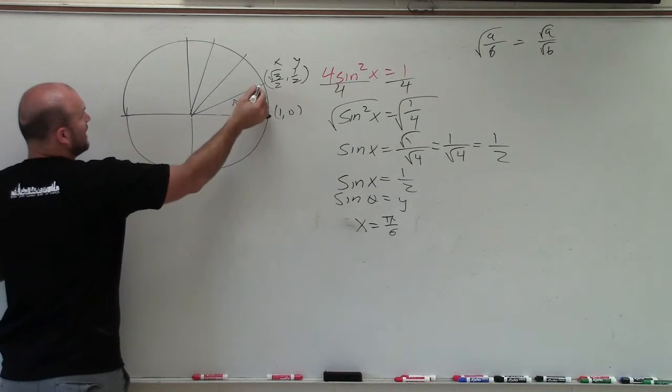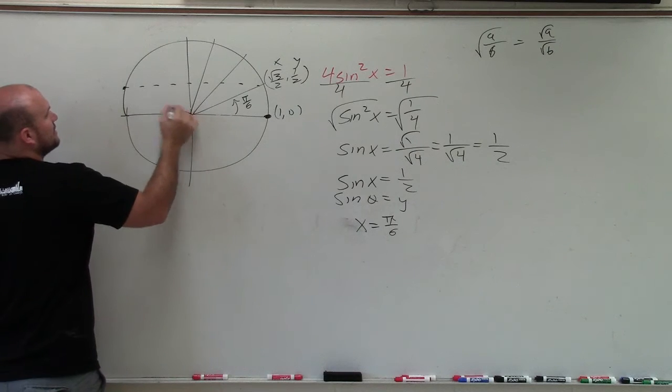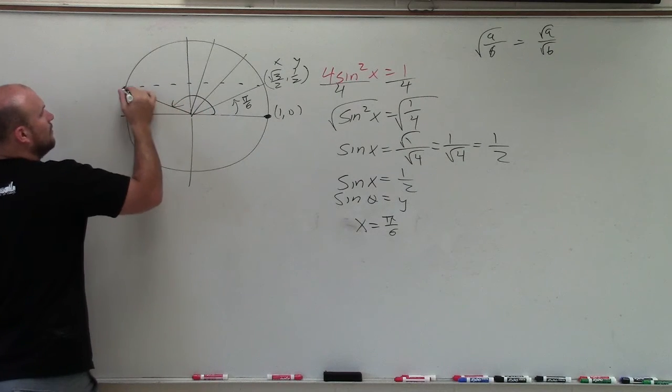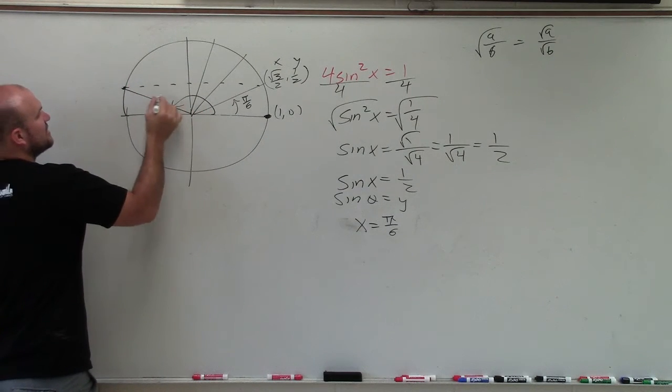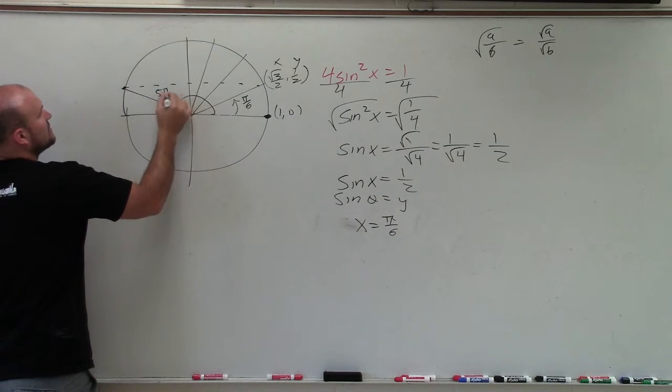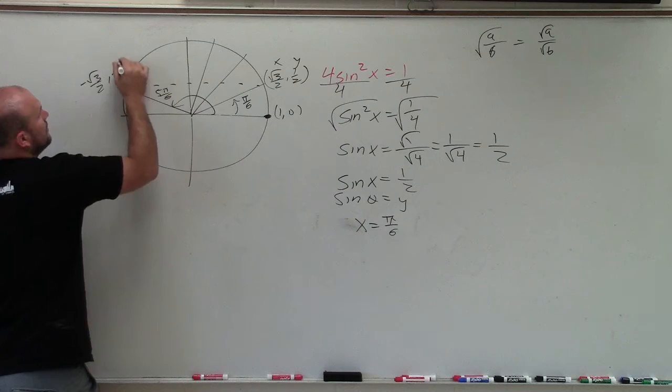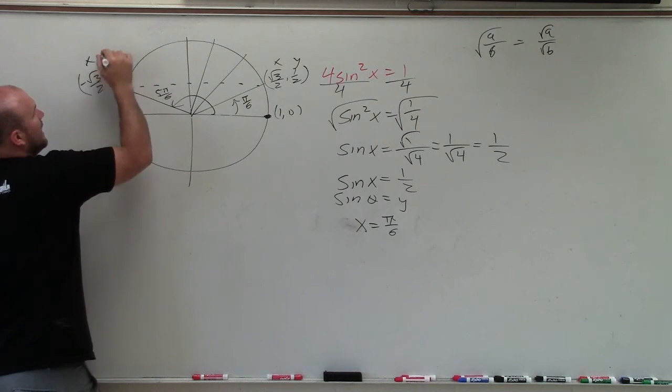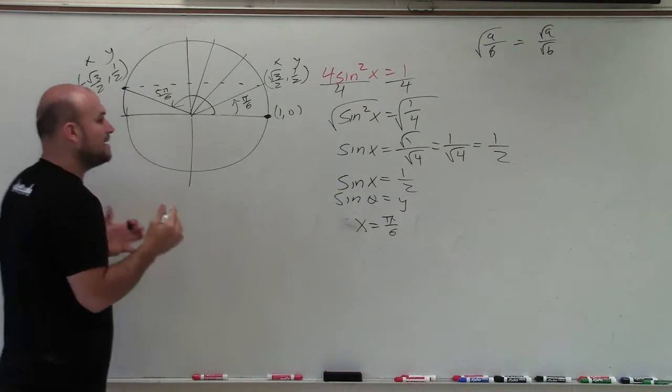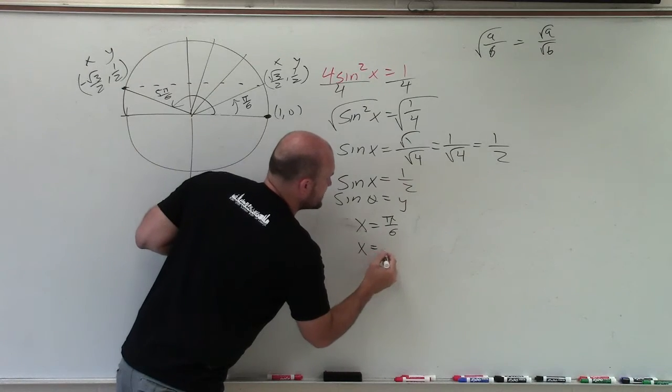It's also equal to 1 half with the reflection over in the second quadrant. That angle. Why? Because this angle, which is 5 pi over 6, has a point of negative square root of 3 over 2 comma 1 half, xy. OK? So now we have actually two solutions between 0 and 2 pi.